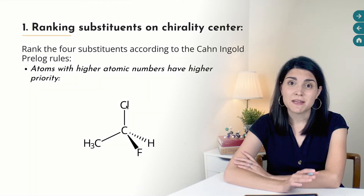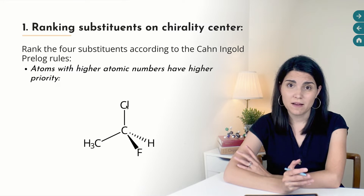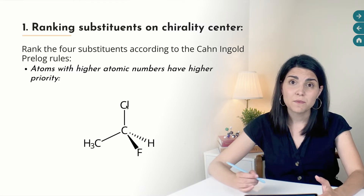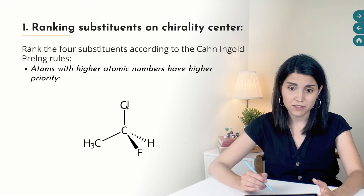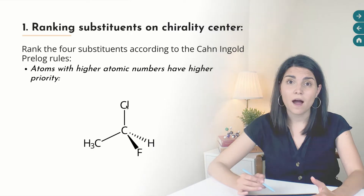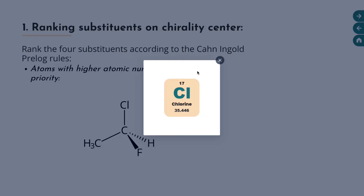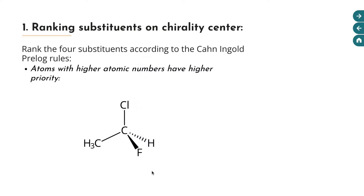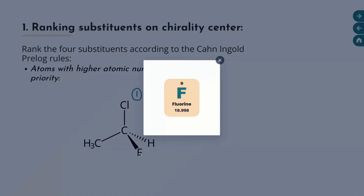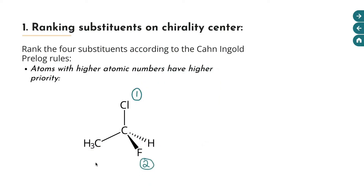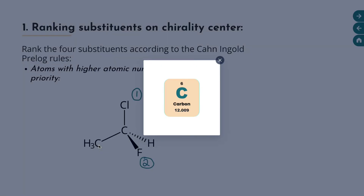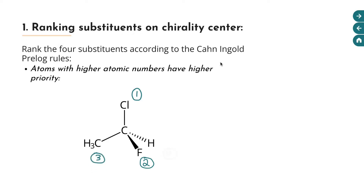If you're comparing two isotopes of the same atom, the one with the higher atomic mass has higher priority. In this molecule, the substituents are a methyl group, a chlorine, a hydrogen, and a fluorine. The atom with the highest atomic number directly connected to the chirality center is chlorine, atomic number 17, so it gets priority one. Next is fluorine at priority two, then the carbon of the methyl group at priority three with atomic number six, and finally hydrogen at priority four with atomic number one.